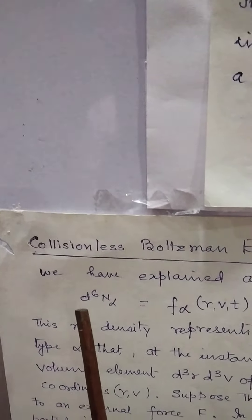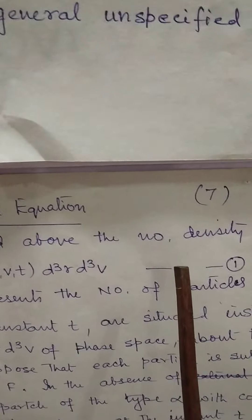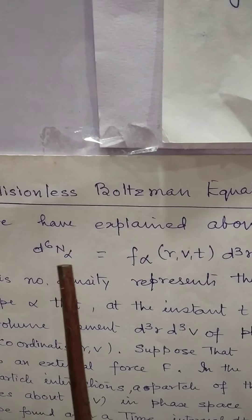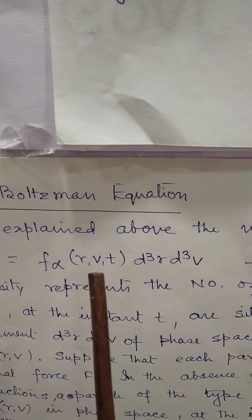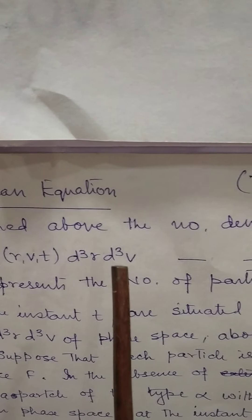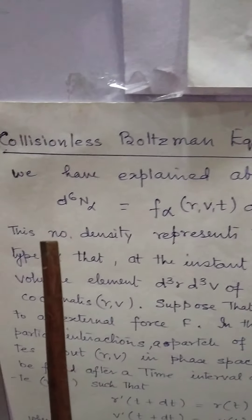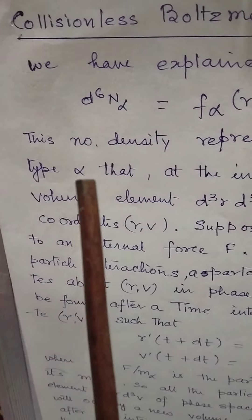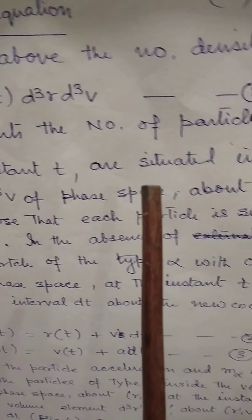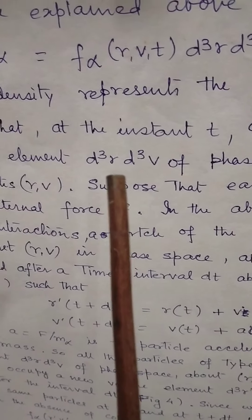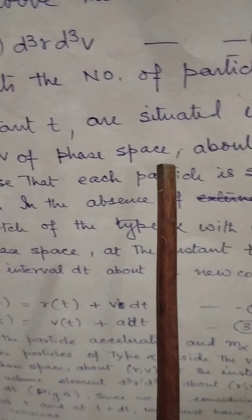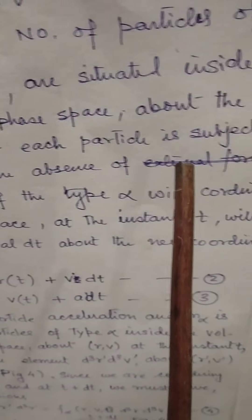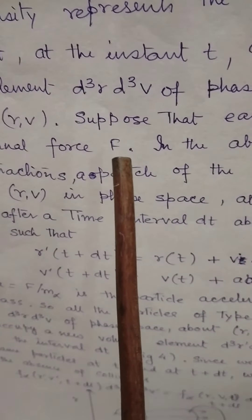For the Collisionless Boltzmann Equation, we have explained the number density, which is given by d raised to the power of 6 n_alpha equal to f_alpha(r, v, t) multiplied by d-cubed r d-cubed v. Let it be equation number 1. This number density represents the number of particles of type alpha that at the instant t are situated inside volume element d-cubed r d-cubed v of phase space about the coordinates r, v.